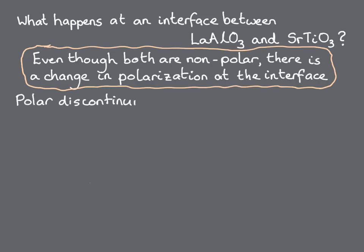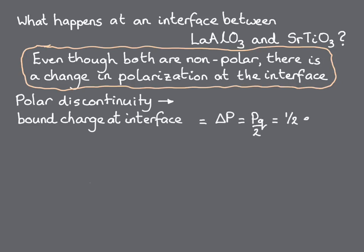The polar discontinuity gives rise to a bound charge at the interface equal to its magnitude of half a quantum, or half an electron per unit cell. This is analogous to the bound charge on the surface of a ferroelectric that we discussed in Module 5.